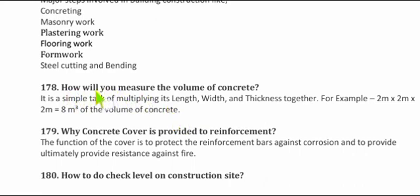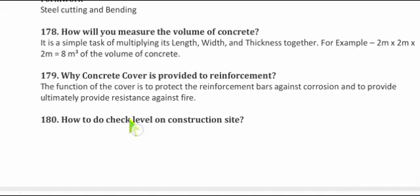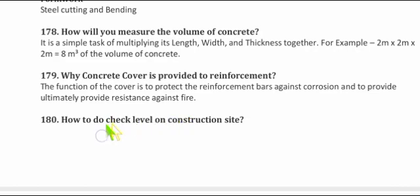Question 178: How do you measure the volume of concrete? Multiply length × width × thickness. For example, 2m × 2m × 2m = 8 cubic meters. Also multiply by a factor of 1.54 to account for dry volume. Question 179: Why is concrete cover provided to reinforcement? The function of cover is to protect the reinforcement against corrosion and to provide resistance against fire.